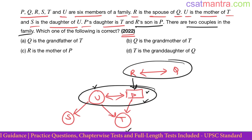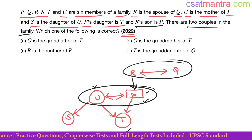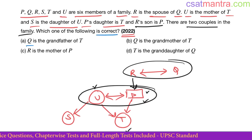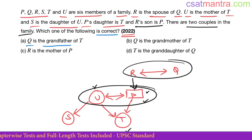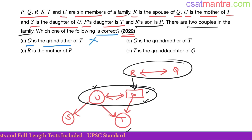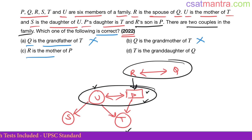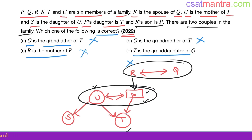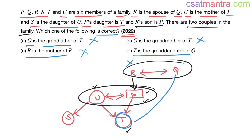Now, which one of the following is correct? Option: Q is the grandfather — Q's gender we do not know. Option: Q is the grandmother — Q's gender we do not know. Option: R is the mother of P — R's gender we do not know. Option: T is the granddaughter — T's gender we know, she is female.